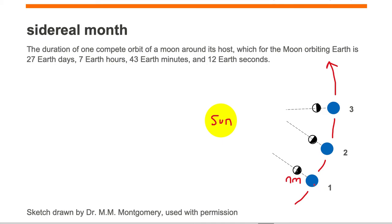The time it takes for the Earth to move from position one to position two in its orbit is the same amount of time it takes for the moon to make one complete orbit around the Earth, which is called a sidereal month.